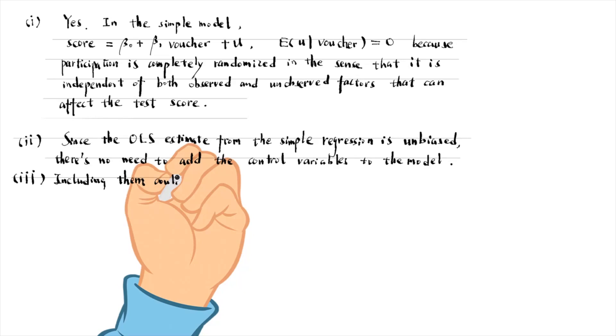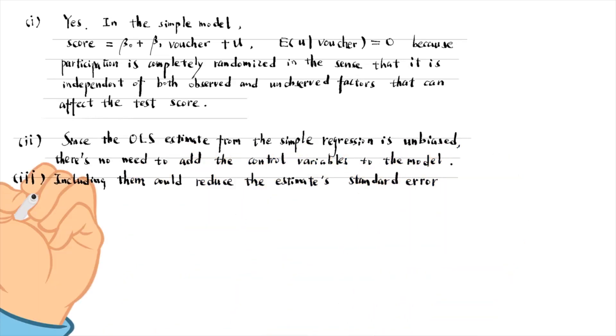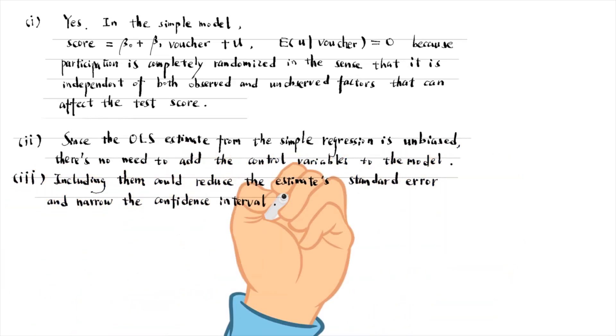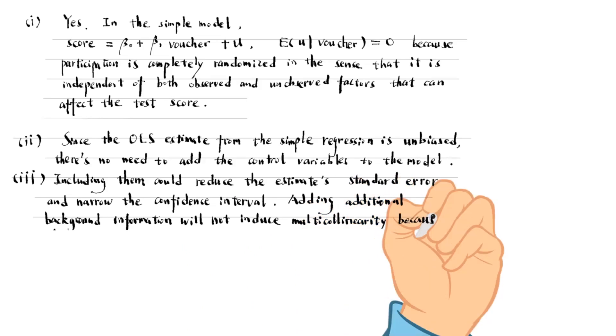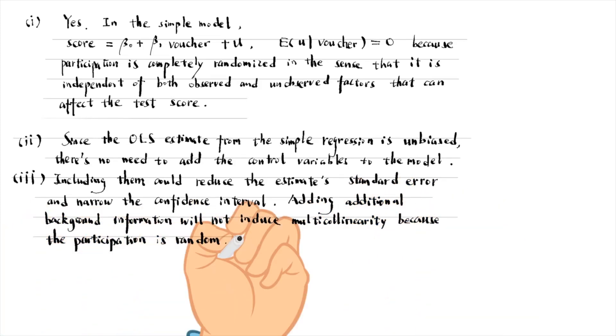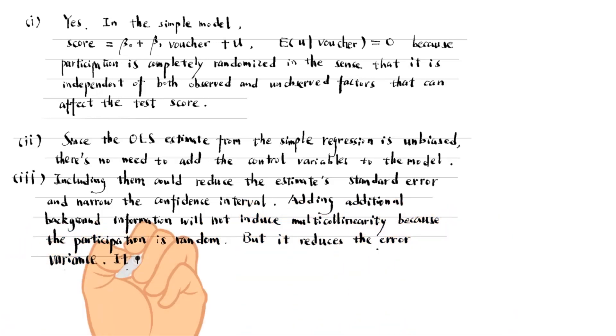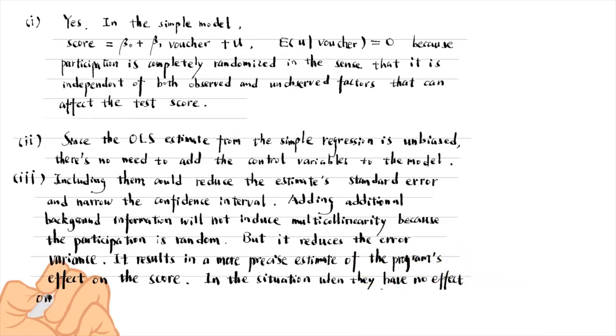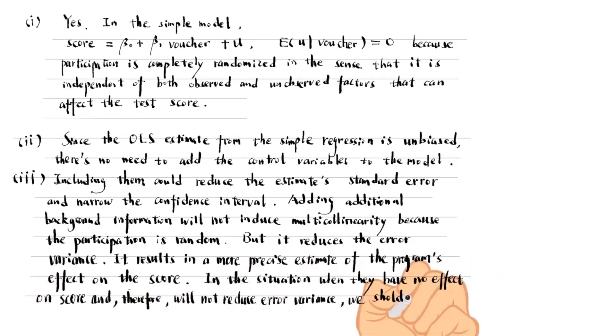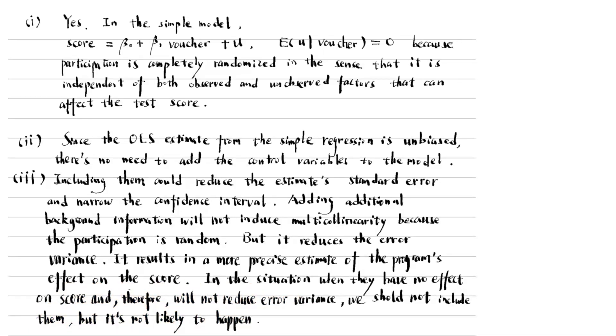It will not affect the estimate, but including them could reduce the estimate's standard error and narrow the confidence interval. Adding additional background information will not induce multi-collinearity because the participation is random, but it reduces the error variance. It results in a more precise estimate of the program's effect on the score. In the situation when they have no effect on the score and therefore will not reduce error variance, we should not include them, but it is not likely to happen. So in research, we should always include the background variables in the model.